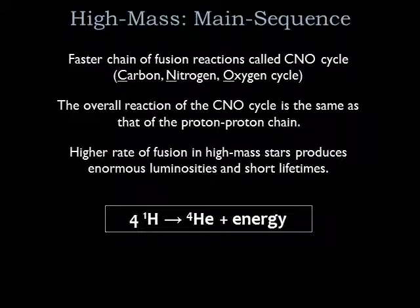The carbon, nitrogen, and oxygen act as catalysts for hydrogen fusion, making fusion proceed at a far higher rate than would be possible by the proton-proton chain alone. This faster chain of hydrogen fusion reactions is called the CNO cycle — CNO standing for carbon, nitrogen, and oxygen. The overall reaction of the CNO cycle is the same as that of the proton-proton chain: four hydrogen nuclei fuse into one helium-4 nucleus. The amount of energy generated per reaction cycle is the same for both, but the CNO cycle reactions happen much faster, leading to the enormous luminosities and short lifetimes of high-mass stars.